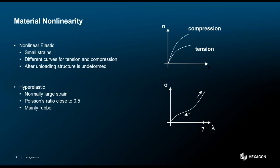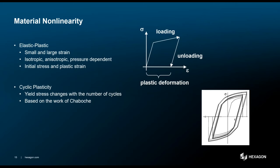For non-linear elastic materials, the structure returns to its original shape when unloaded — no permanent deformation — but the material stiffness changes with the magnitude or direction of the applied load. A special case is hyper-elastic materials, which display changing material stiffness, can have very large strains, and have a Poisson's ratio close to the mathematical limit of 0.5. Non-linear materials can also display plasticity: a plastic material may initially behave elastically, but at higher stresses it takes on permanent plastic deformation. If the load is reapplied, the material can behave differently due to work hardening and the presence of plastic strain, so repeated load cycles can yield different results.